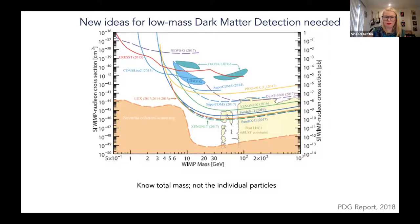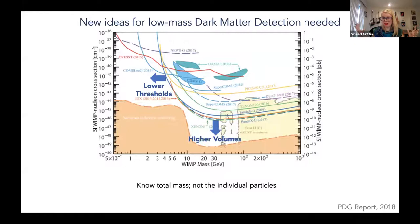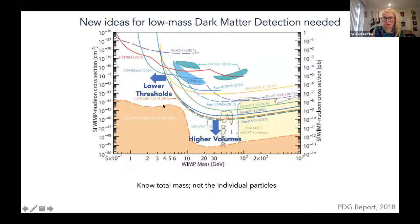When designing new detectors, there are two things we can do. First, push to higher volume — making bigger detectors to increase the mass and cross-section area. Second — and this is what I'll discuss — push the sensitivity to lower thresholds or lower dark matter masses, moving these lines to the left on the plot. We want to design dark matter detectors that are sensitive to even lower mass dark matter particles.